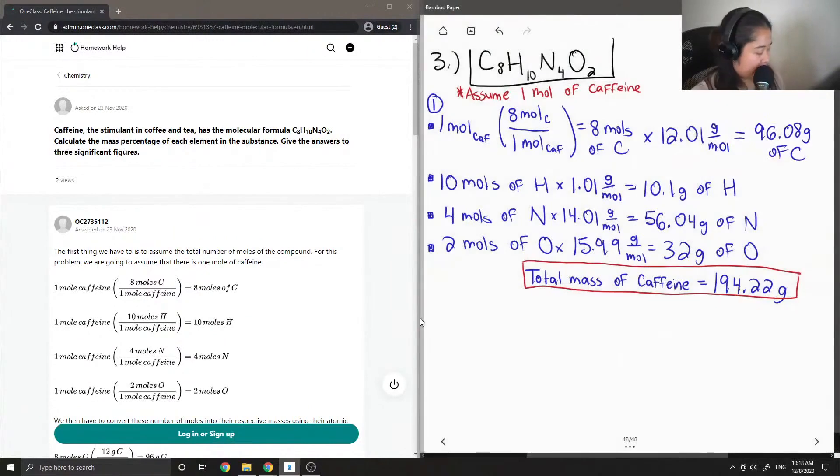So now that we have all these different masses, the second part of the question is just actually calculating the mass percentage. The mass percent is equal to the mass of your component divided by the total mass. So we have all these masses.